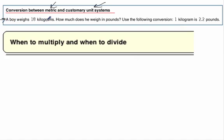Here's our problem. A boy weighs 18 kilograms. How much does that weigh in pounds? This is important. Notice it gives you the conversion. One kilogram is 2.2 pounds. We're going to need that.